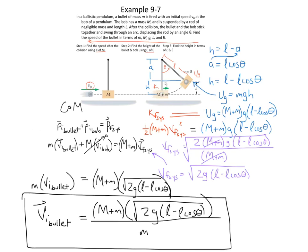We may even try to do this in class. You're going to solve for the initial velocity of the bullet — as long as you know the mass of the two objects, the length of the pendulum, and the angle it swings up to, you can plug those values into this equation and solve for the initial velocity of the bullet. That is the intent of this exercise, and we've done it. If you have any questions, please come see me, and I'll see you on the next one.